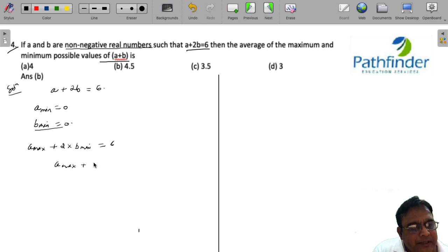So A maximum plus 0 is equal to 6. A max is equal to 6.